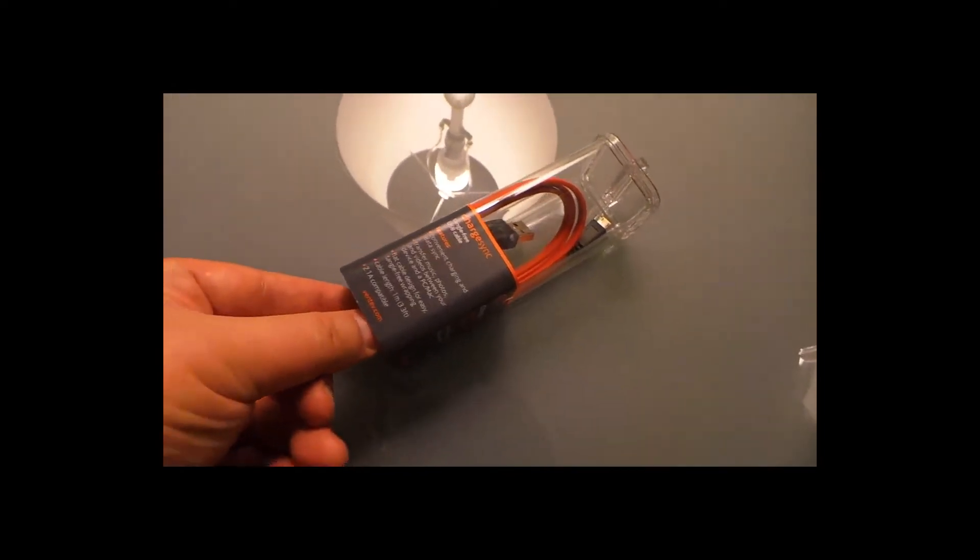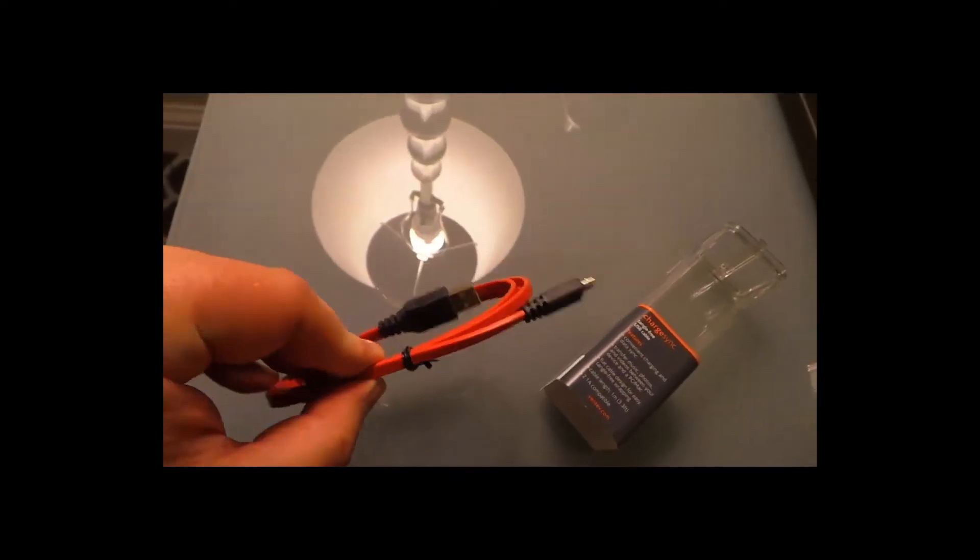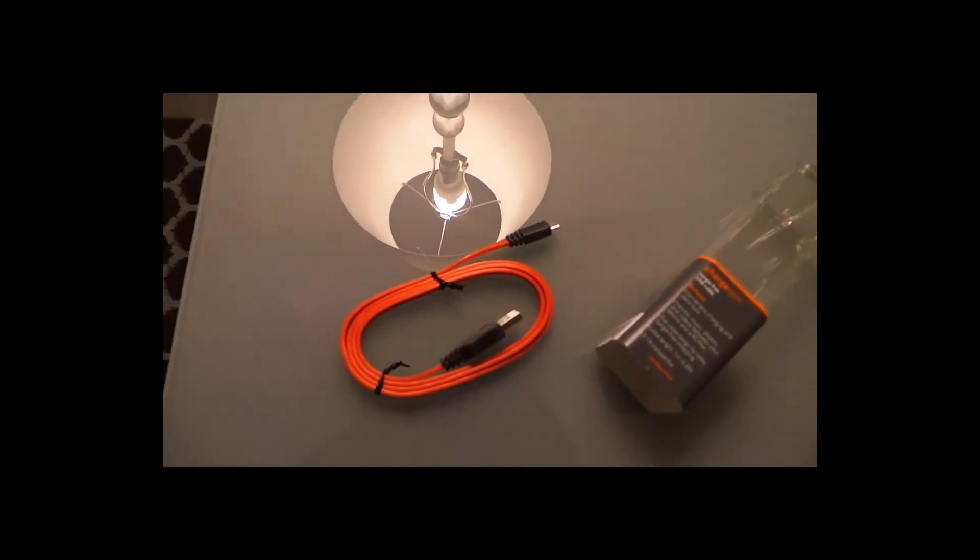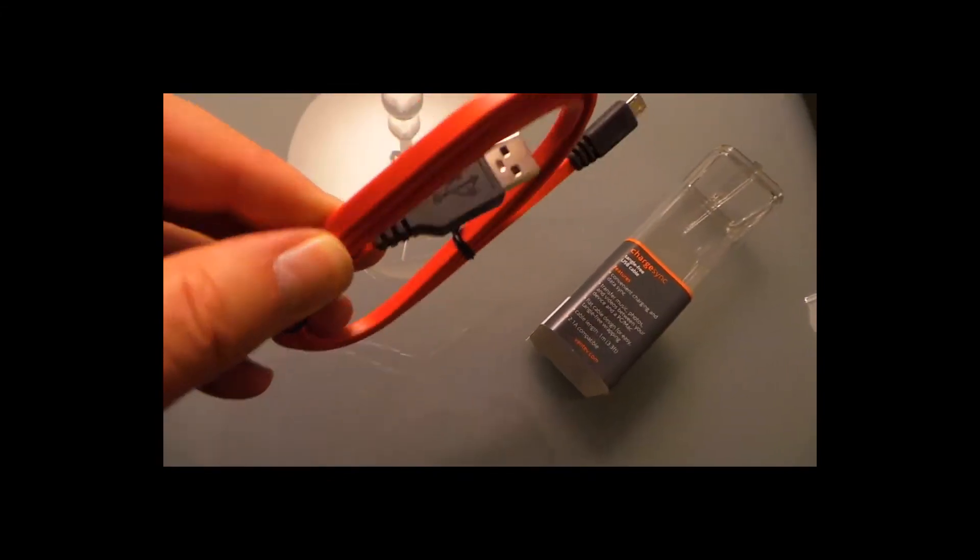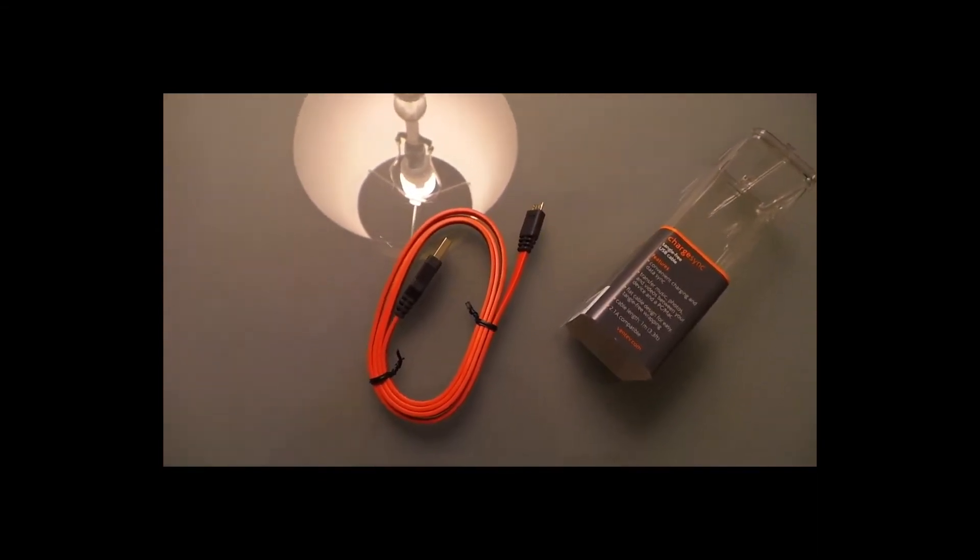Cable length is one meter, which is 3.3 feet, and it's 2.1 amp compatible. So if you're buying these wall units like this and you're not buying the cables, you're not getting the charge getting through. The beautiful part about charge sync is they make these cables with extra copper and good stuff in them to transport all that power and get you juiced up a whole lot quicker on your mobile devices.